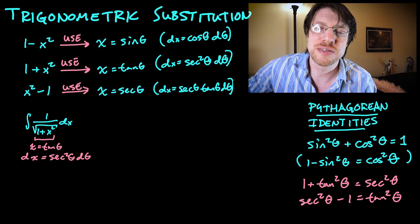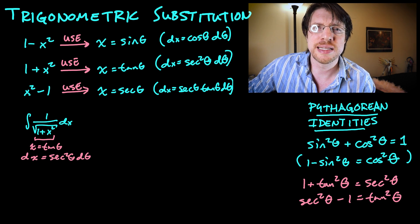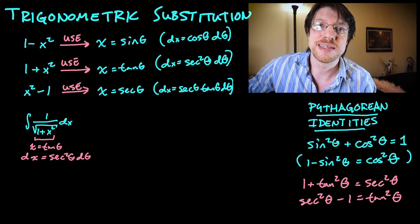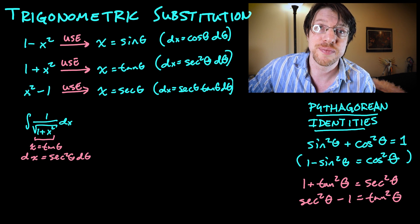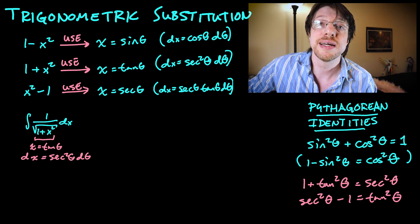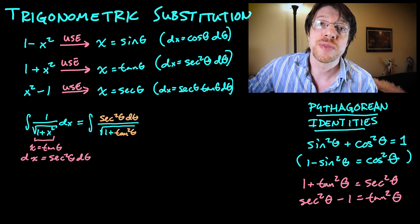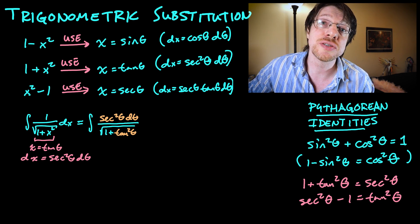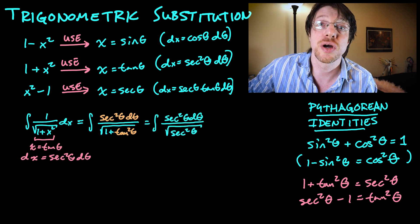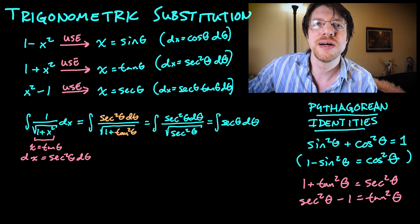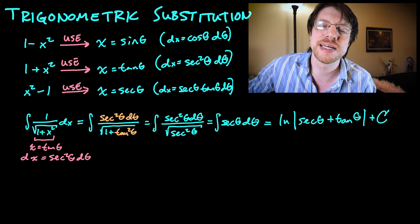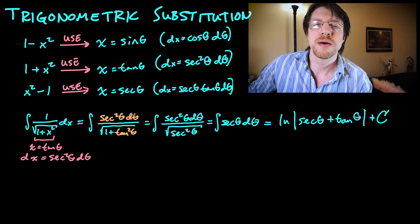For the integral of one over the square root of one plus x squared dx, we have one plus x squared in the denominator, so we take x equals tangent of theta, meaning dx equals secant squared theta d-theta. Plugging in, we get the integral of secant squared theta d-theta divided by the square root of one plus tangent squared theta. That one plus tangent squared theta becomes secant squared theta; taking the square root leaves secant on the bottom, which cancels one secant from the top. We're left with the integral of secant theta d-theta, giving ln|secant theta plus tangent theta| plus c.